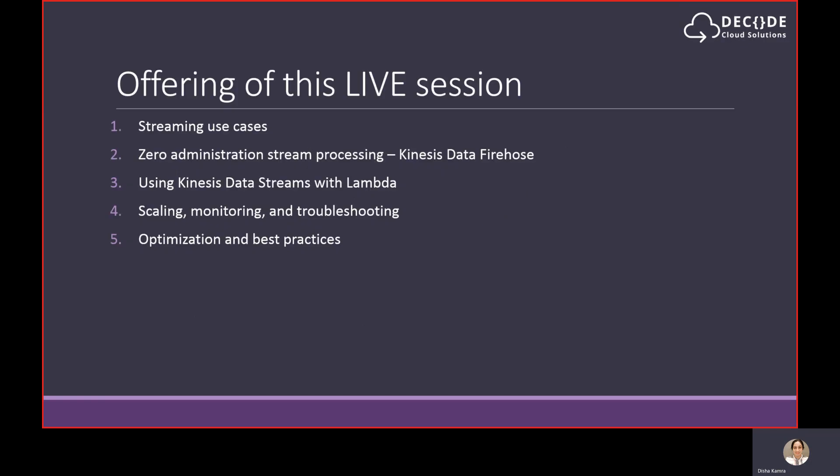In this session, I will cover five topics. First, I will talk about streaming use cases and briefly explain the different Kinesis services. Then I will show you how to build zero-administration streaming processing with Kinesis Data Firehose. I will talk about how to use Lambda for on-demand compute with Kinesis Data Streams. I will provide guidance on how to scale, monitor, and troubleshoot Kinesis. And finally, I will discuss how to optimize your Kinesis-based application and highlight some best practices.